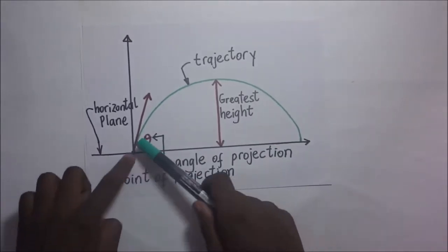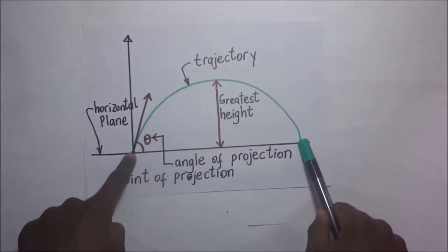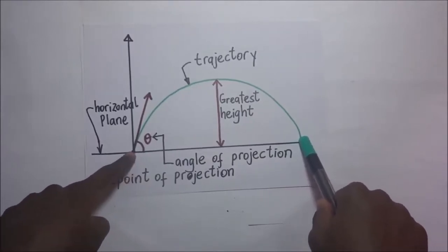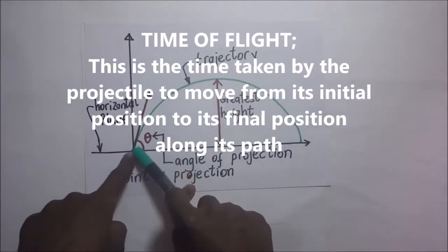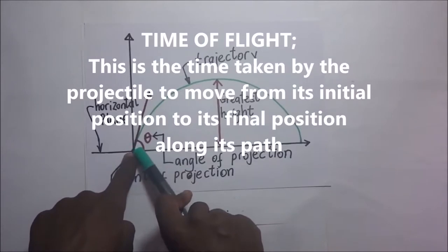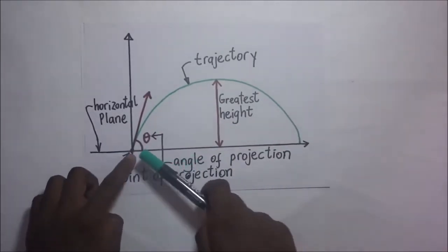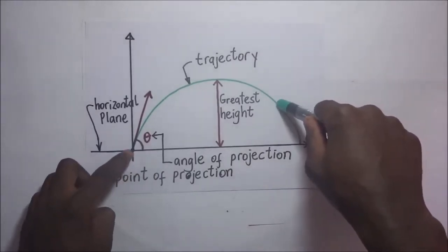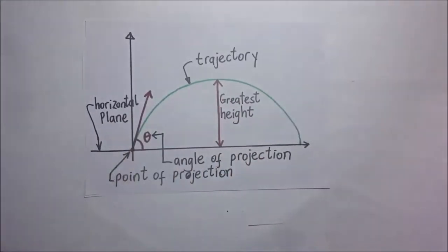As this motion takes place, it's going to take some time to move from beginning to end. That time is what we call the time of flight — the time taken by the projectile to move from its initial position to the final position along the trajectory. So the time taken for the ball to move from its initial position up to any point is what we are calling the time of flight.